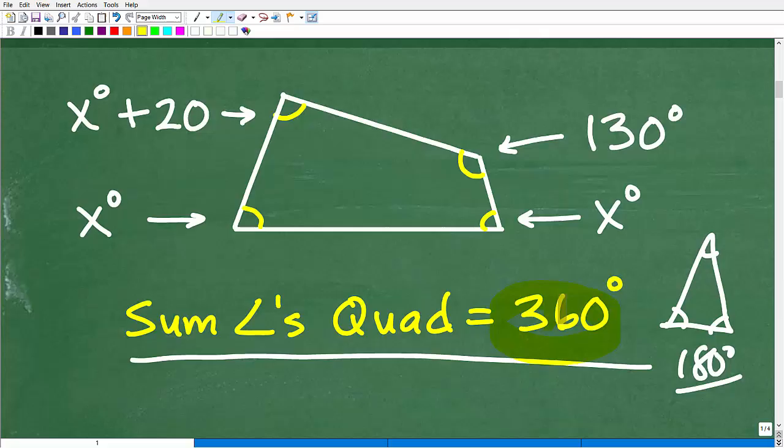Because if you understand these basic facts, then we could just use some basic algebra to solve this problem. Because if the sum of the angles of this quadrilateral is 360 degrees, what we're saying is that this angle x plus this angle over here x plus this angle x plus 20 degrees plus this angle 130 degrees has to add up to 360 degrees.